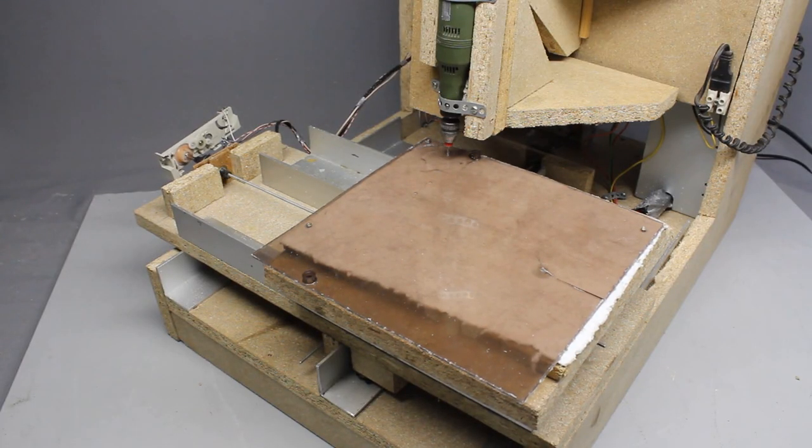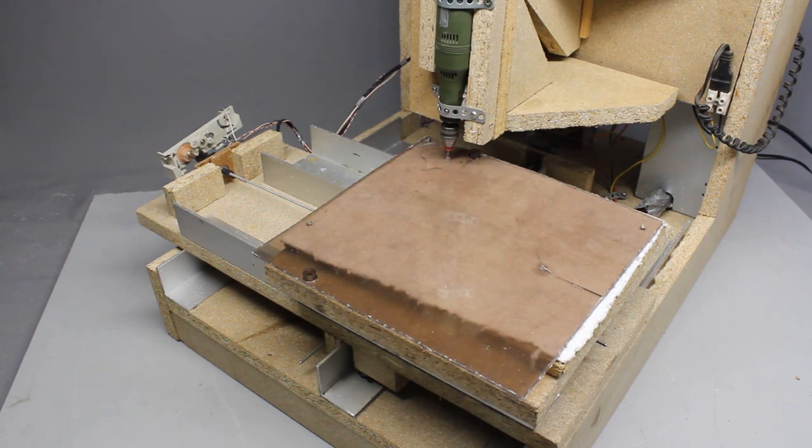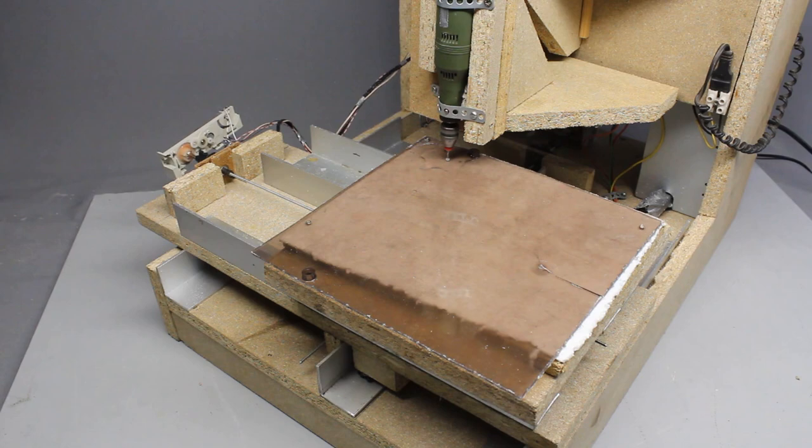Those geared motors became part of a CNC machine. Same as version 0.5, CNC 0.6 was created with low tech tools.